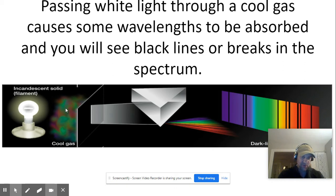However, if we pass it through a cool gas, we end up with breaks in the spectrum. And these are what we call spectral lines.